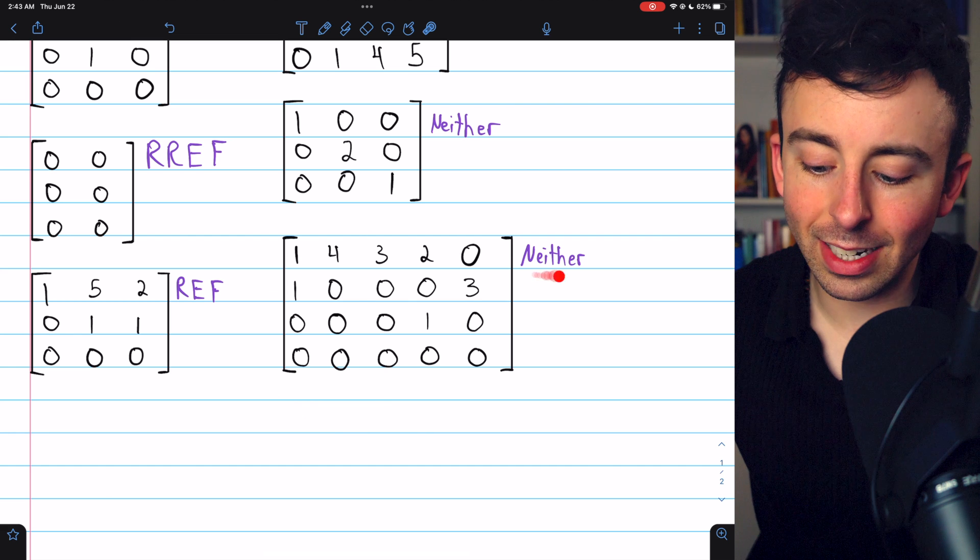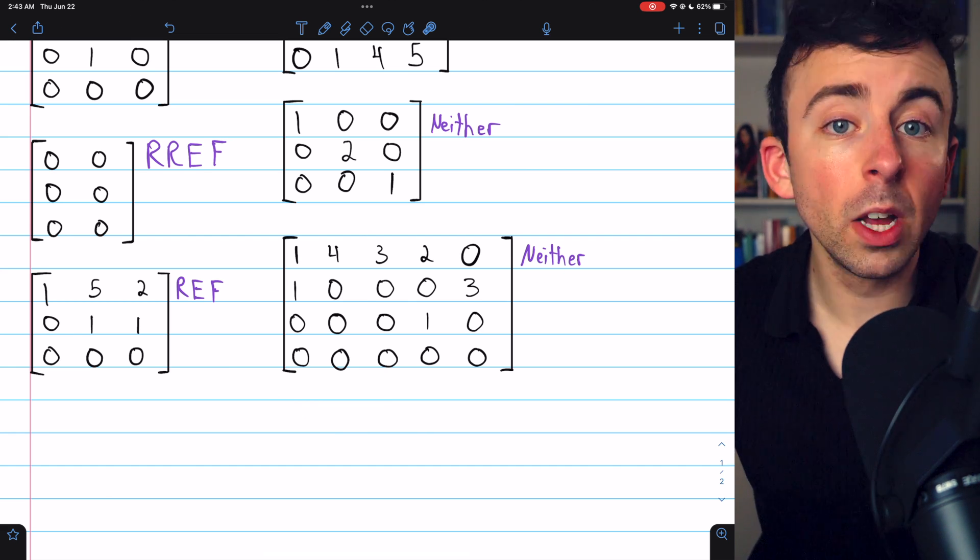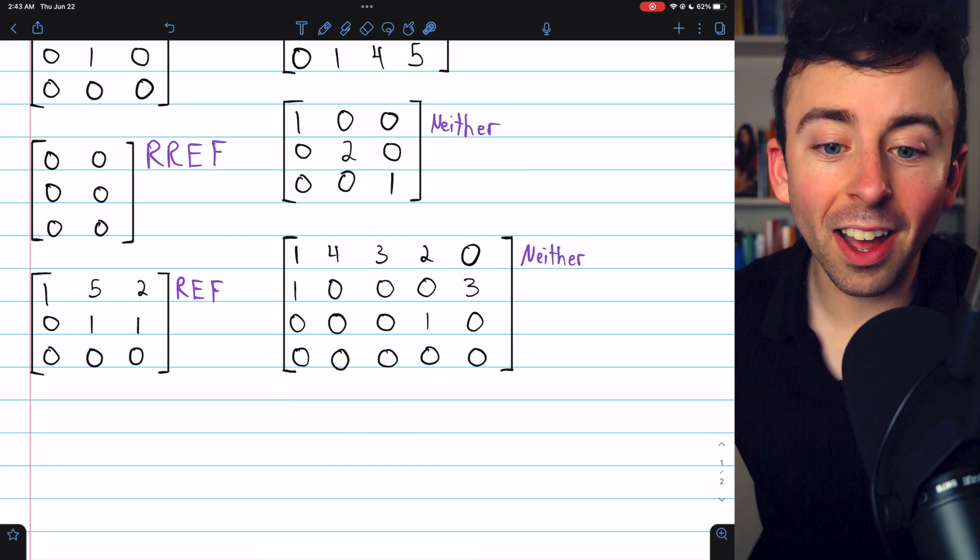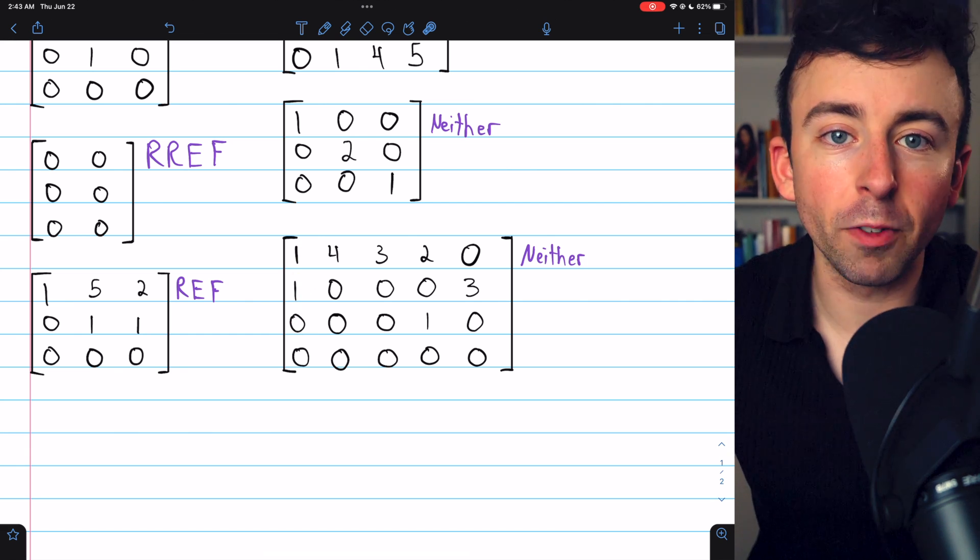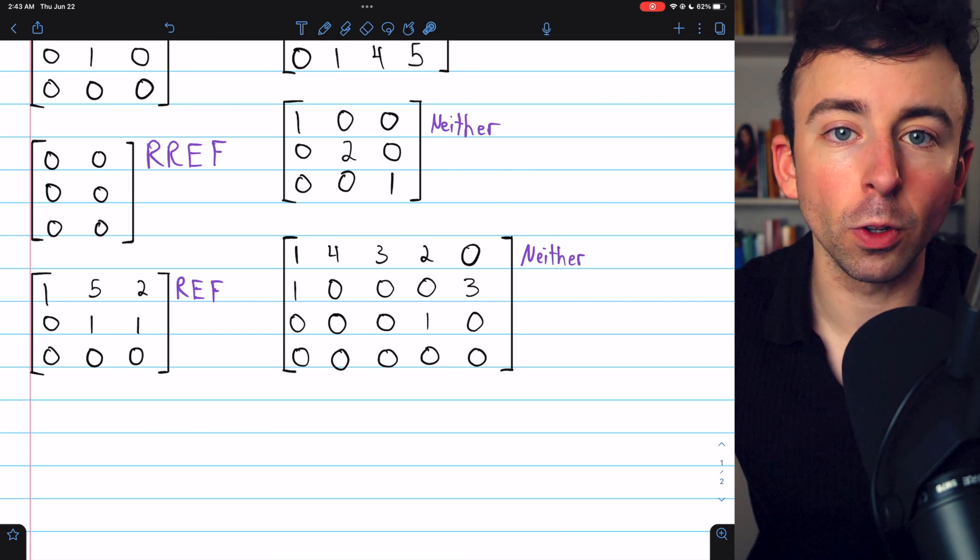This last matrix is in neither reduced row echelon form or row echelon form because it has a non-zero entry below a leading one that precludes it from being in either of the echelon forms.